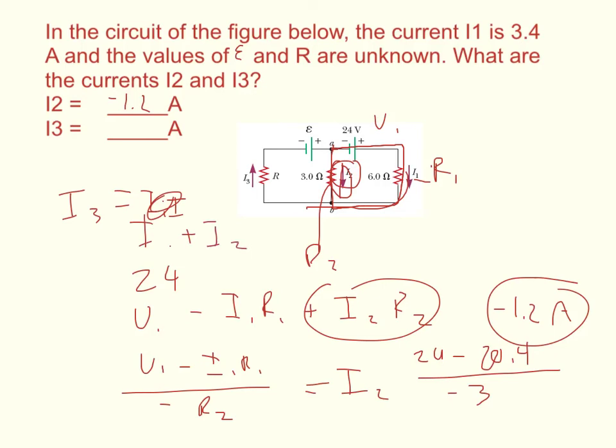So we get 3.4 plus negative 1.2 is equal to I3, and that number is positive 2.2.